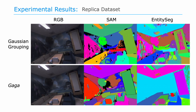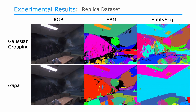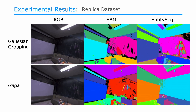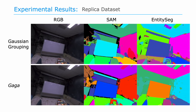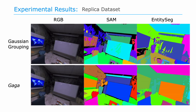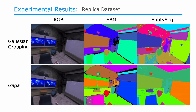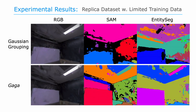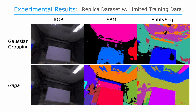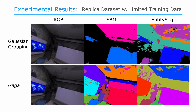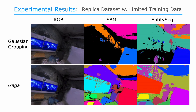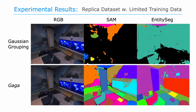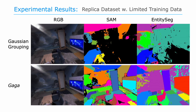Results on the Replica dataset: segmentation masks provided by GAGA are much more stable as the camera pose changes. Results on the Replica dataset with limited training data: with only 9 images, GAGA can provide decent segmentation results, while the previous method struggles to track objects and creates significant empty regions.